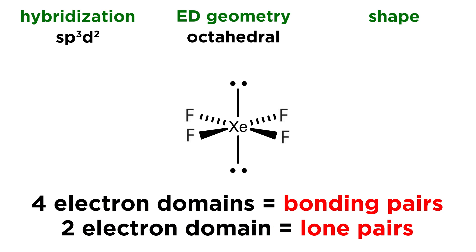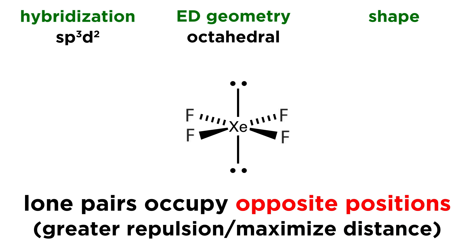To assess the shape: we have four bonding pairs and two lone pairs. Because those lone pairs exhibit greater repulsion than bonding pairs, they occupy opposite positions — wherever one lone pair is, the other must be on the opposite side of the xenon atom. That means the shape is square planar. The two fluorine atoms on dash bonds go back into the screen, and the two on wedge bonds come out, outlining the corners of a square perpendicular to the screen. So: sp3d2, octahedral, and square planar.